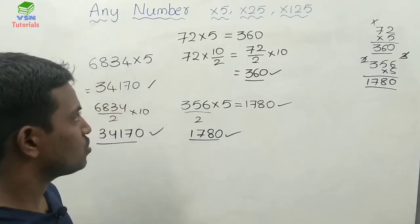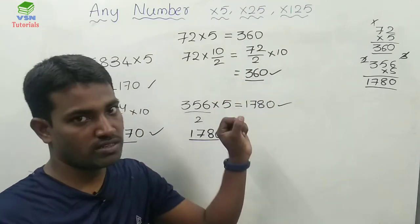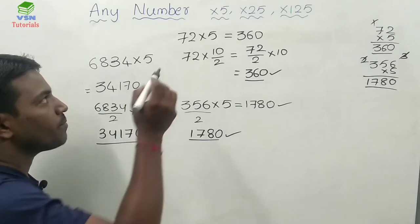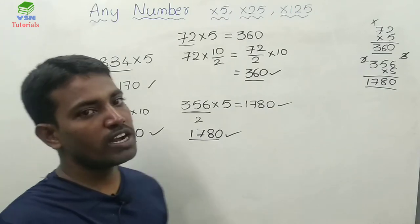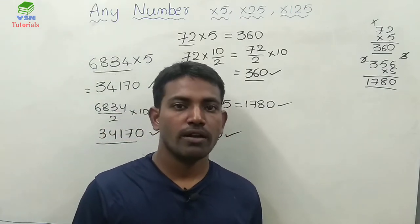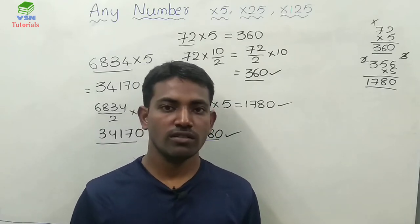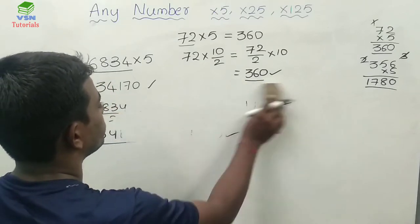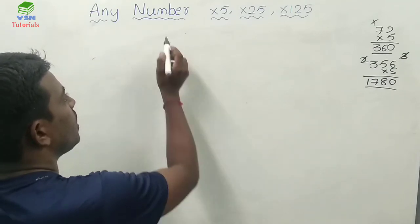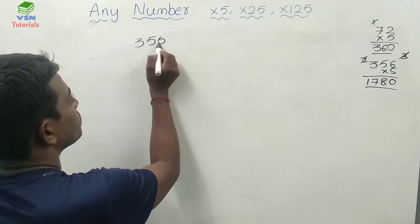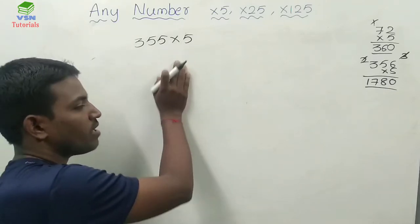Without using any pen and paper, you can get the answer if you are perfect in this trick. But if you observe, I have taken all even numbers so far. If I want to multiply an odd number by 5, is there any confusion? Yes, so let's try to do that. I want to multiply 355 by 5. If you observe this number, this is an odd number.